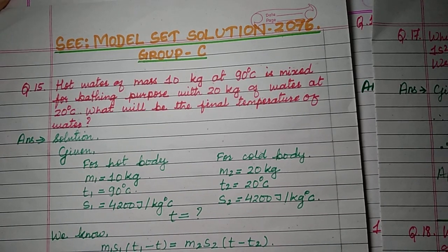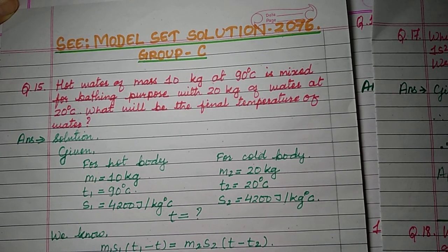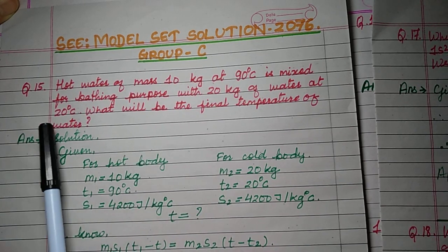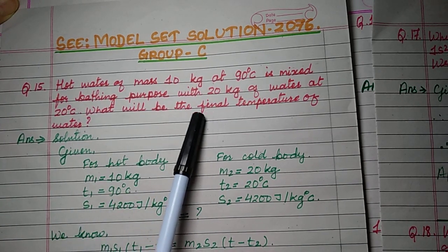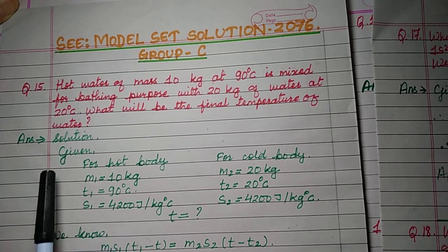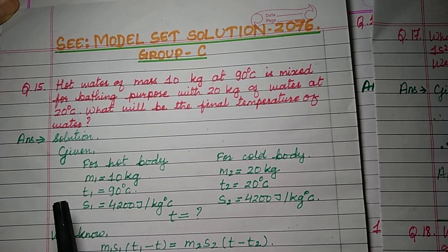Group C, question number 15: hot water of mass 10 kg at 90 degrees Celsius is mixed for bathing purpose with 20 kg of water at 20 degrees Celsius. What will be the final temperature of water? Write down the information given in the question.